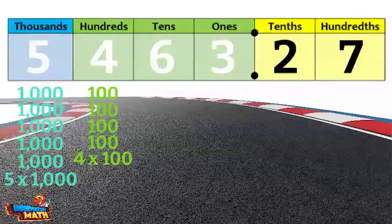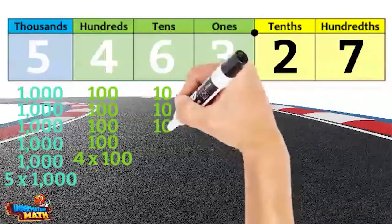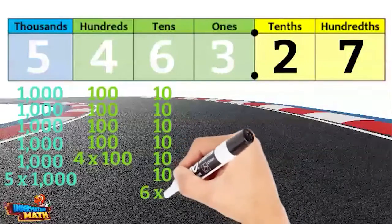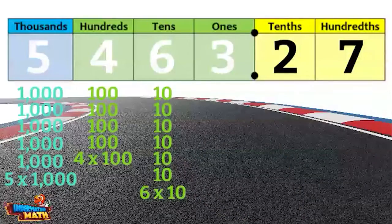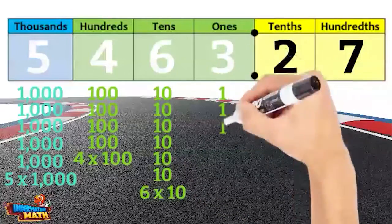There are six tens. In expanded notation, we have the product six times ten. There are three ones. To write this in expanded notation, we write the product three times one.